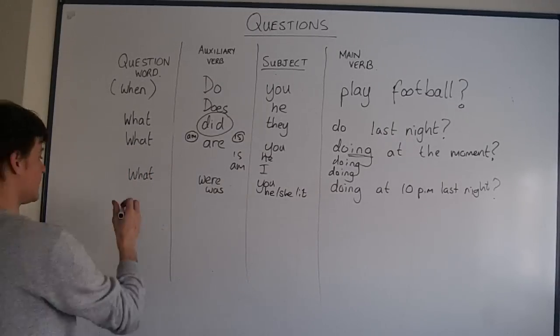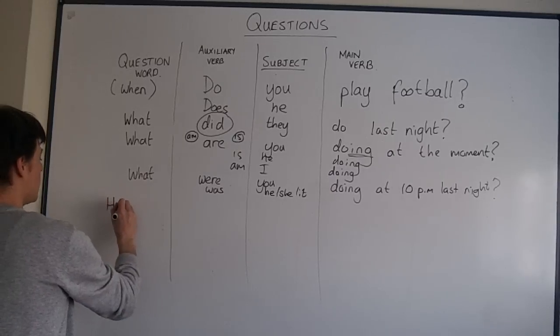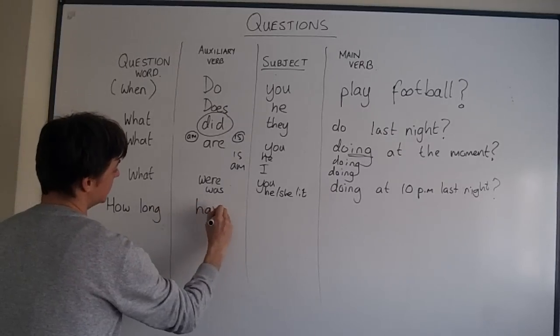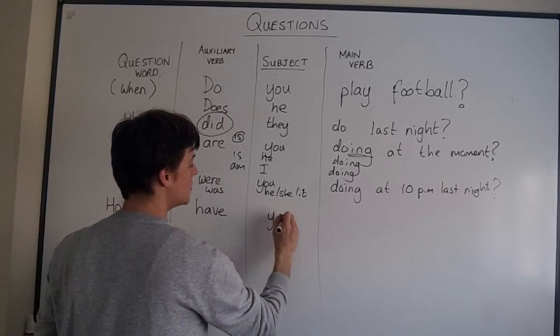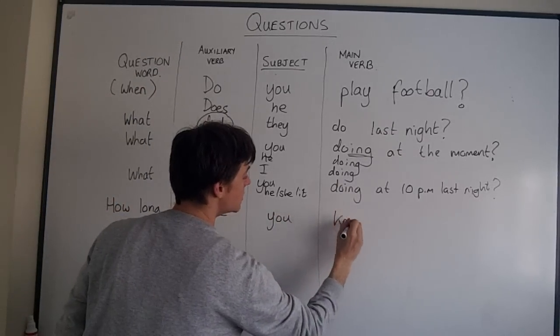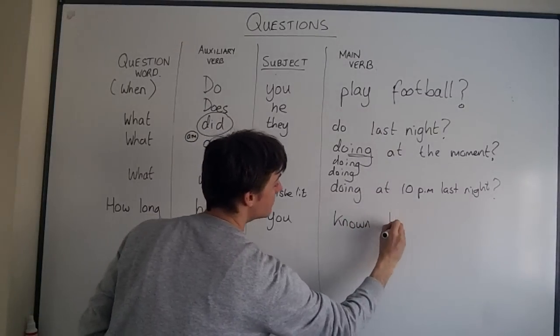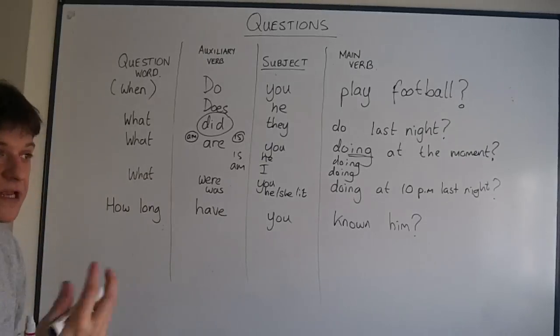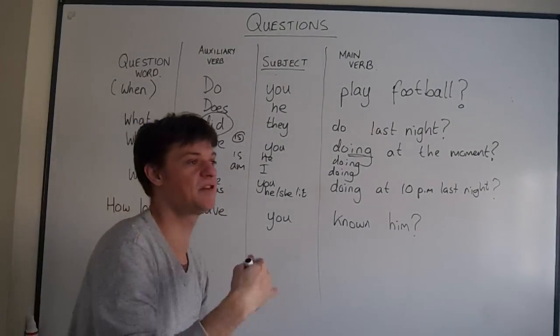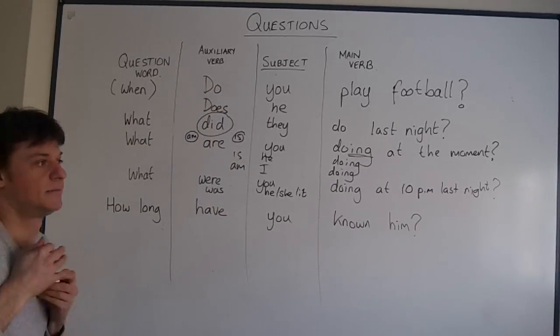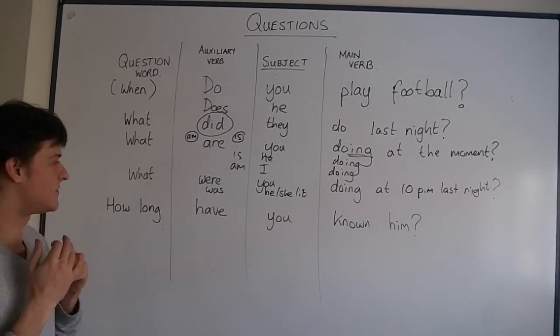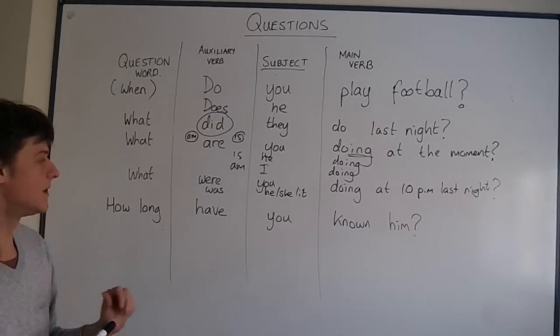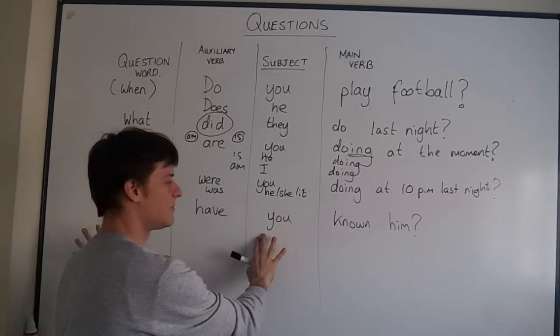What about present perfect? How long have, is the auxiliary verb for present perfect, you, known him? How long have you known him? How long have you lived here? How long have you worked in your company? OK. It's when you ask about a period of time present perfect.